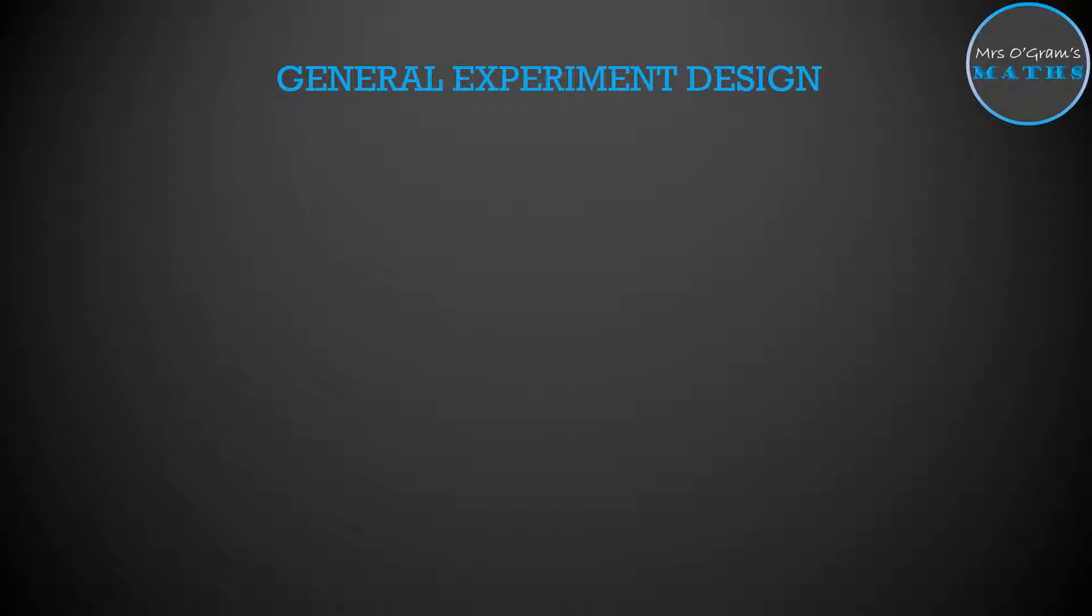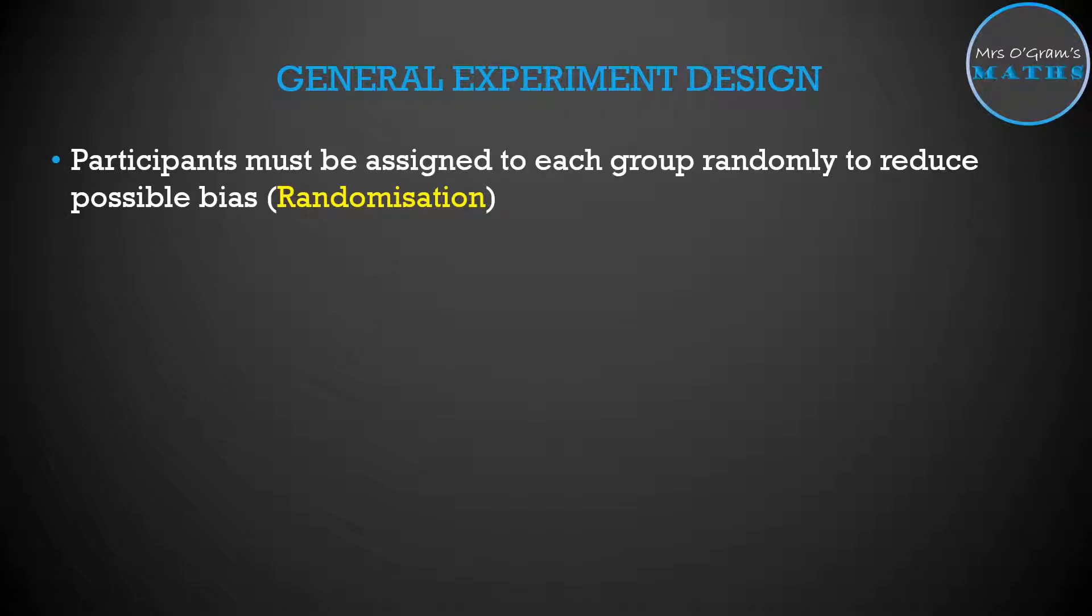A few pointers about your general experiment design is that participants must be assigned to each group randomly so that you can reduce any possible bias. This is called randomization. You randomly allocate them to be in the control group or the treatment group, the group that's going to actually have something happen to them. That's if you're doing a control and alternative experiment design. If you're doing a paired experiment and you're testing out two different situations for the same participants, you can also randomize which one they do first.